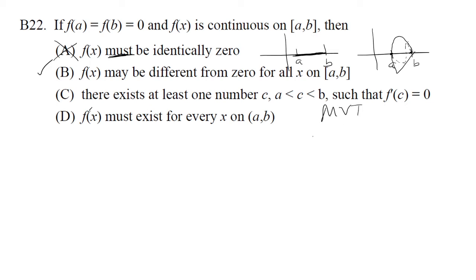We know that the condition for the mean value theorem is f has to be continuous on the closed interval and differentiable on the open interval. We're given that f of x is continuous on the closed interval, but there's no mention that f is differentiable on the open interval. So we cannot use the mean value theorem. C is false.